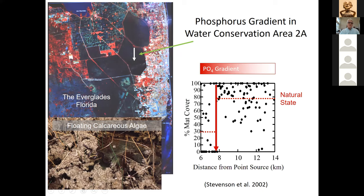We did our project along a phosphorus gradient in Water Conservation Area 2A. Water came out of a canal at the S10 gate and drained south through WCA 2A. We studied the effects of this phosphorus gradient on biological condition. The effect on percent MAC cover was dramatic: in reference conditions far from the point source, around 80% of slough area was covered with the floating calcareous algal mat, but by about 7.75 kilometers from the gate, sloughs almost never had that mat.